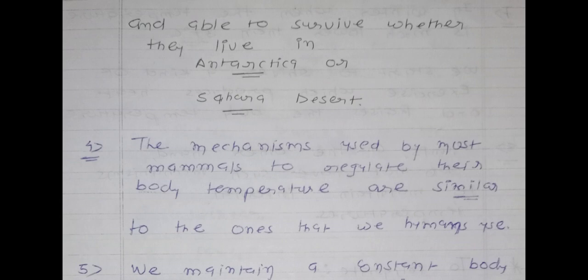Mammals are able to survive whether they live in Antarctica or the Sahara Desert without changing their internal body temperature. In Antarctica, temperature may be minus 15 or minus 10 degrees centigrade, while in the Sahara Desert it may be more than 45 degrees centigrade, yet mammals survive in both without changing their internal body temperature.